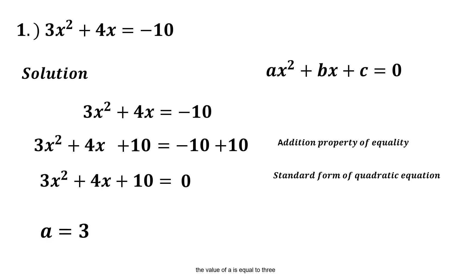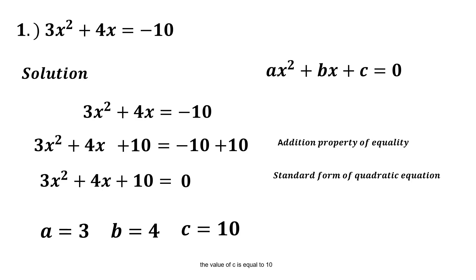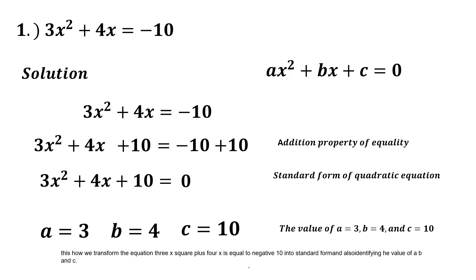Now we will identify the value of a, b, and c. The value of a is equal to 3, the value of b is equal to 4, and the value of c is equal to 10. This is how we transform the equation 3x² + 4x = -10 into standard form and also identifying the value of a, b, and c.